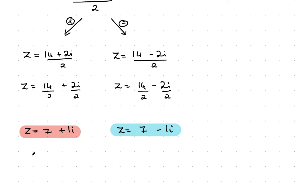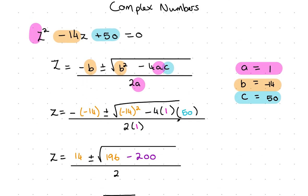The conjugate is given the symbol z with a little bar over it, equal to 7 minus 1i. That's where it comes from. It's the value of i that changes from plus to minus or vice versa. That's complex roots given by the quadratic formula.